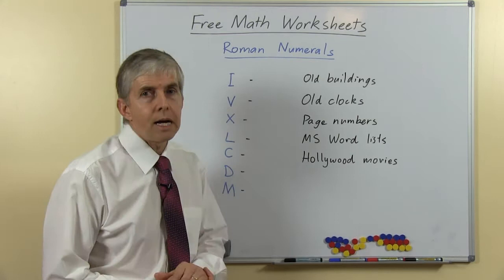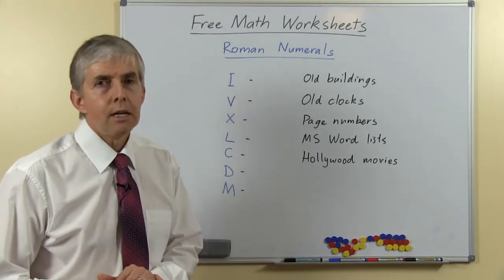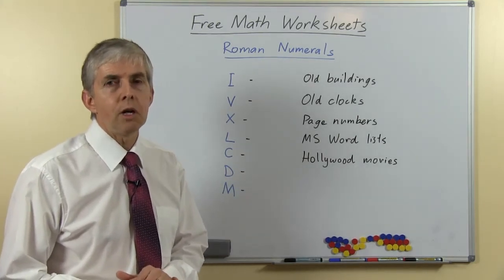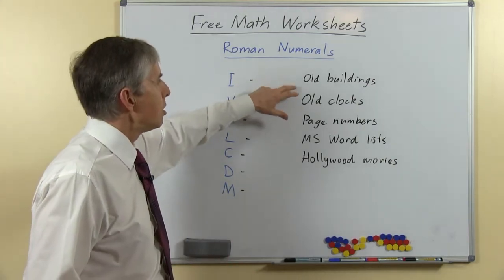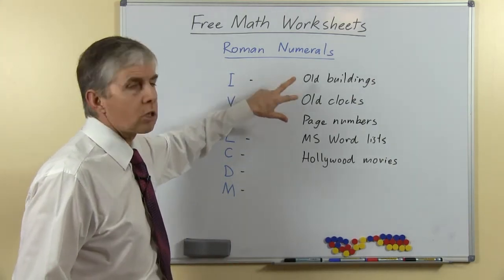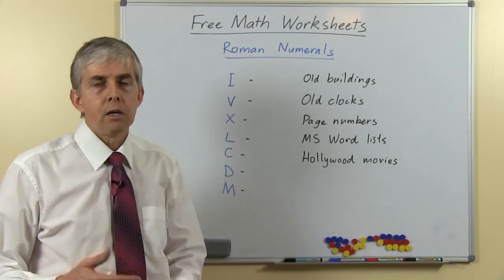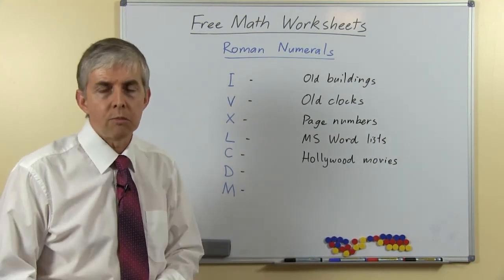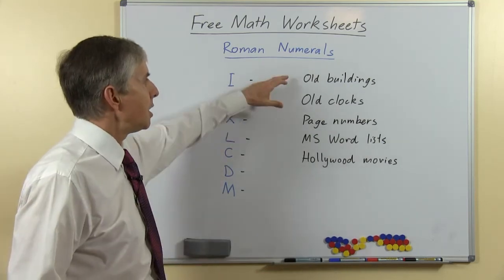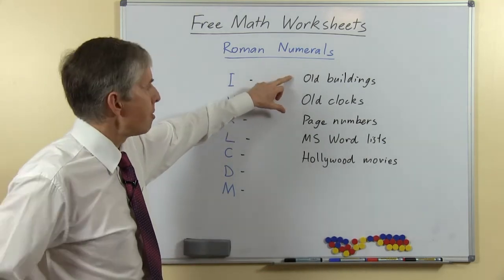We also have some context for this in that you can still see Roman Numerals today in various places. Now on old buildings and old clocks you can still see it. Where I grew up in the UK there are lots and lots of places where Roman Numerals were used on buildings and clocks, but even in Australia we have buildings that have them.